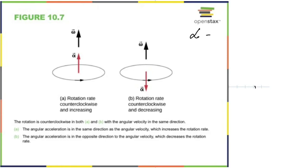It's just like when you're driving to the north and step on the brakes — your linear acceleration is to the south because you're slowing down. But if you're driving north and step on the gas, your acceleration is in the same direction as the velocity. Same thing with rotational motion. Alpha equals d²θ/dt².